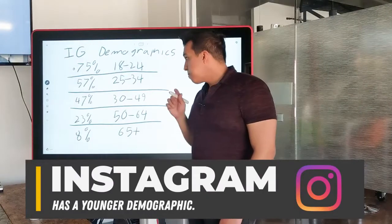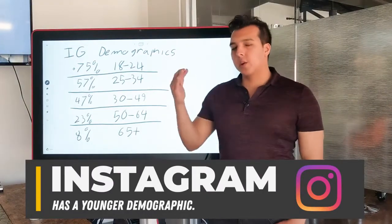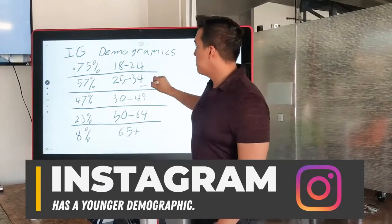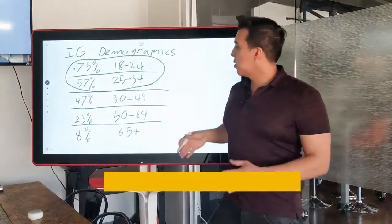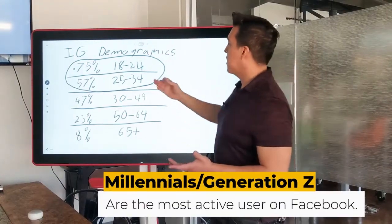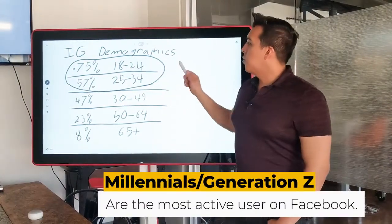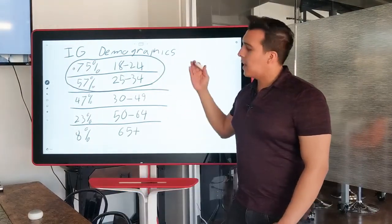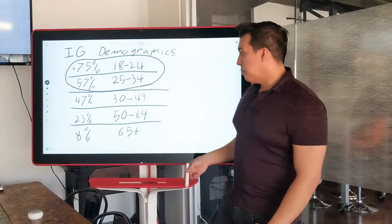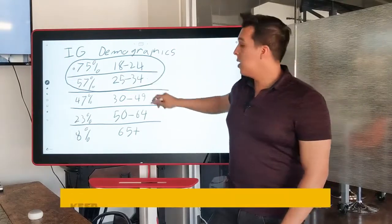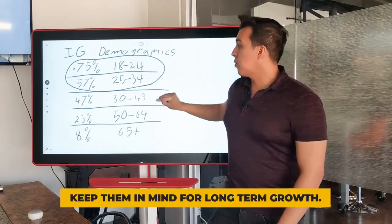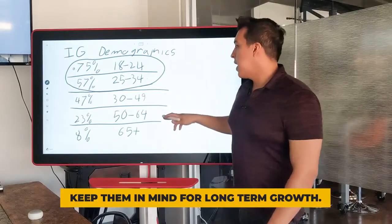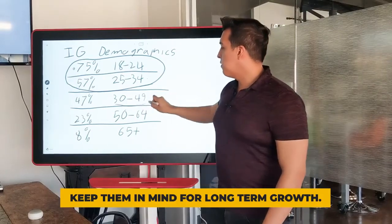Number two: Instagram. Instagram tends to be a younger demographic, but keep in mind Millennials—somewhere between Gen Z and Millennials—18 to 24, those are going to be the most active. As you go down the list, 30 plus, that number slowly goes down. But keep in mind the Millennials are going to be very active on Instagram, so keep them in mind for long-term growth.